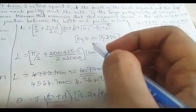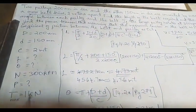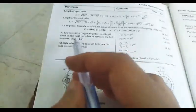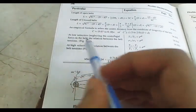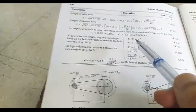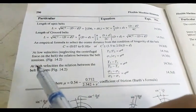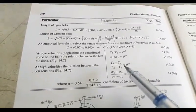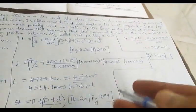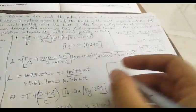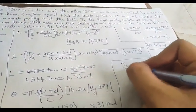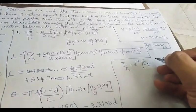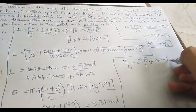In this problem, the maximum tension given is 1 kilonewton. At low velocities, we neglect the centrifugal force on the belt, and the relation between belt tensions is T1 / T2 = e^(mu × theta). At high velocities, centrifugal tension TC must be considered. Since our velocity of 3.14 m/s is low, we neglect TC and use equation 14.3A from page 290.